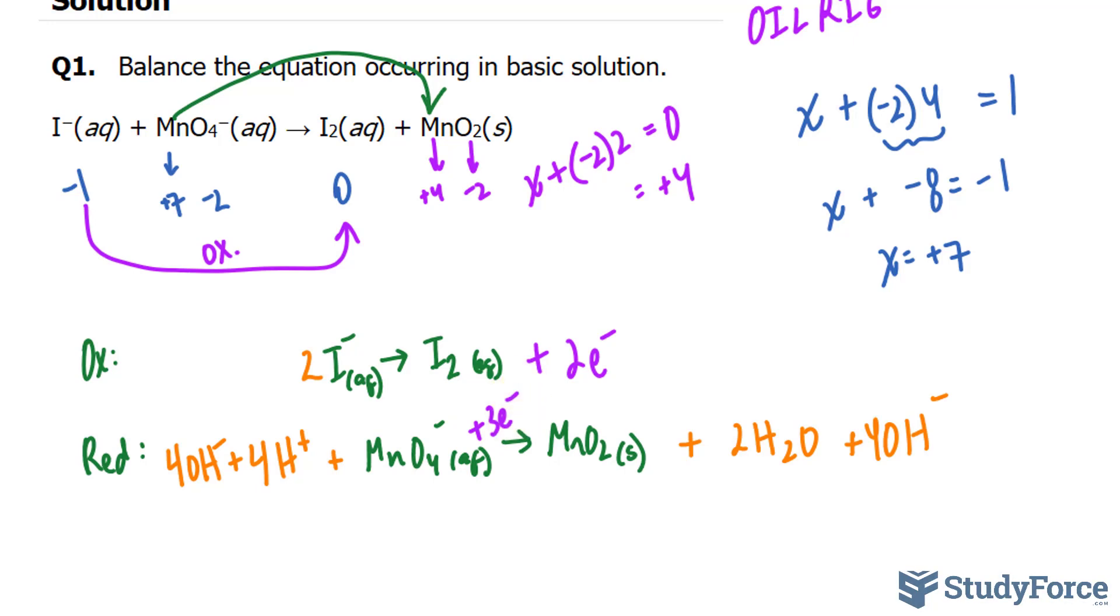The next step involves making sure that the electrons in the oxidation half reaction and the electrons in the reduction half reaction are the same. This one is two, this one is three. So to balance this out, they need to meet at six. So I'll multiply this by three and this by two.